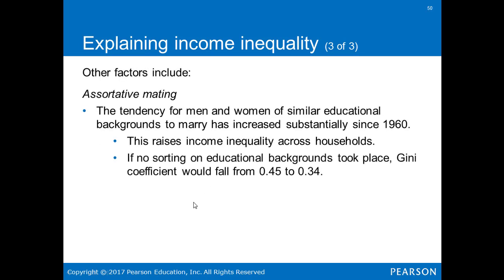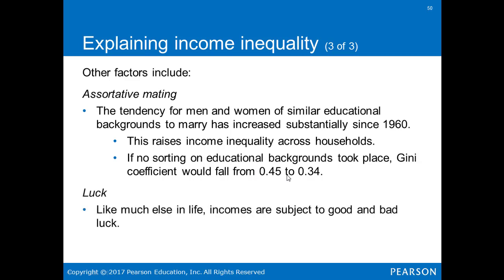Other factors contributing to income inequality include assortative mating — the tendency for men and women of similar educational backgrounds to marry has increased substantially since 1960, raising income inequality across households. If no sorting on educational backgrounds took place, the Gini coefficient would fall from 0.45 to 0.34. Luck also plays a role, as incomes are subject to good and bad luck.